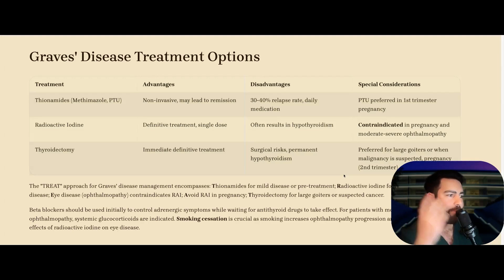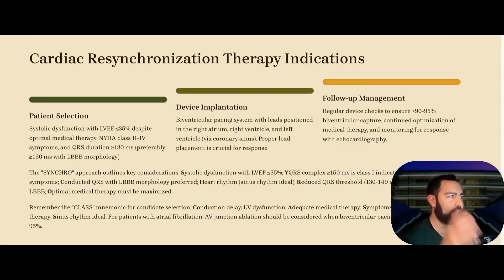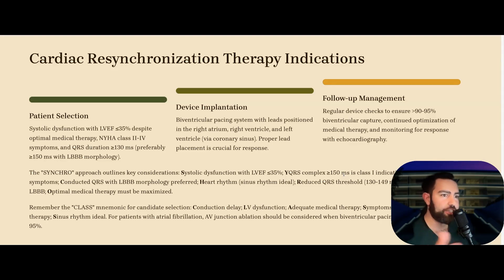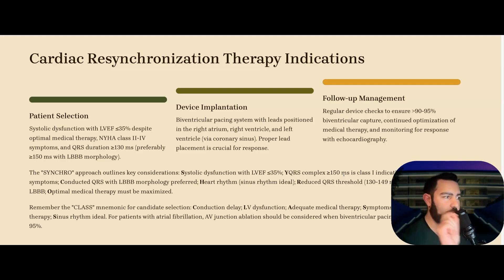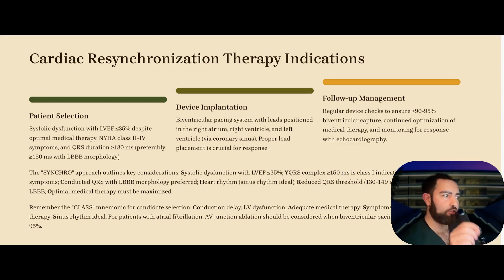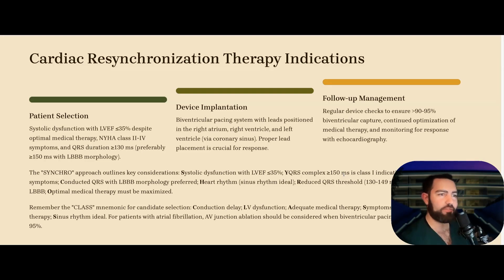Cardiac resynchronization therapy — CRT. Key numbers: systolic dysfunction with LVEF less than 35%, QRS complex greater than 150 ms with LBBB — this is a Class I indication if they have NYHA Class II to IV symptoms, conducted QRS with LBBB morphology, and sinus rhythm. Reduced QRS threshold of 130–149 ms is still beneficial with LBBB. Patients must be on optimal medical therapy to receive CRT. CRT is a biventricular pacing system with leads in the right atrium, right ventricle, and left ventricle via the coronary sinus.